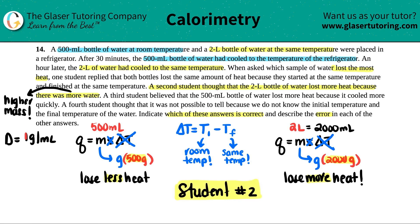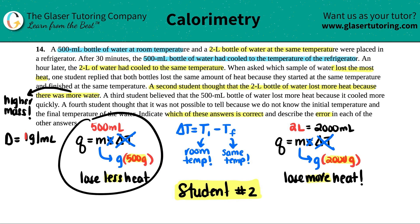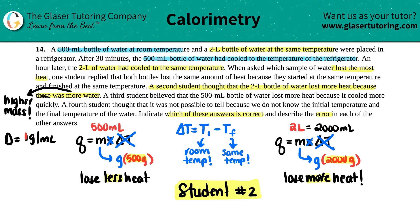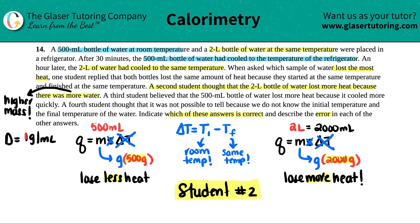Let's go through the errors in students 3 and 4. The third student believed that the 500 ml bottle of water lost more heat because it cooled more quickly. We already know that's incorrect. When you're talking about cooling more quickly, you're talking about time. But if you look at Q equals mS delta T, there is no time variable in that formula. Time has nothing to do with this formula, so that's why the third student is incorrect.